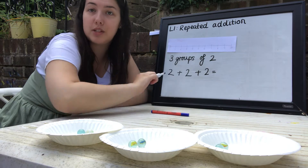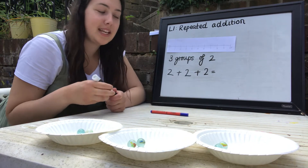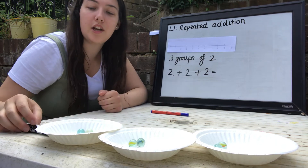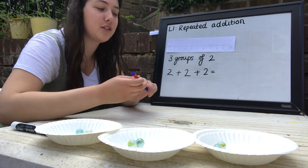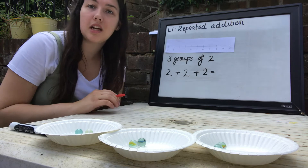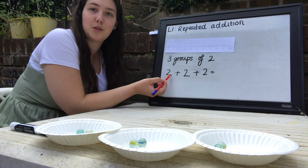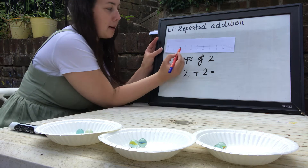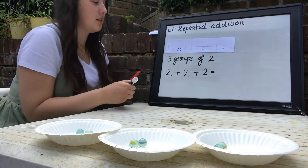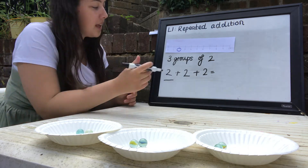We've got three groups so we should have three numbers that we're adding, our groups are two so we should be adding the number two, and they should all be the same — which they are. Now last week we counted in twos to help us find the answer, but this time we're going to be using a number line. We've used a number line lots of times before for adding, so this should be easy. We're going to start by circling our first number, which is two, on the number line.